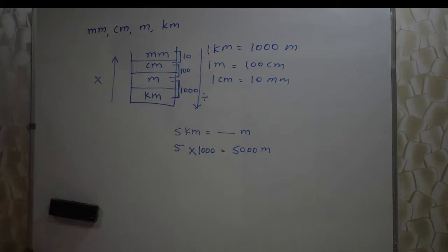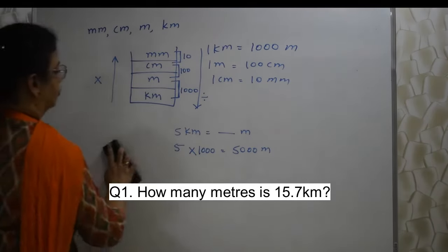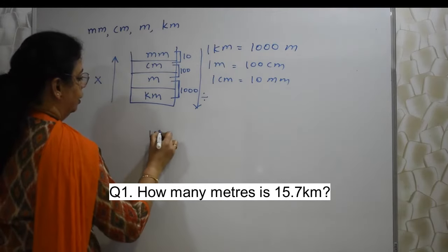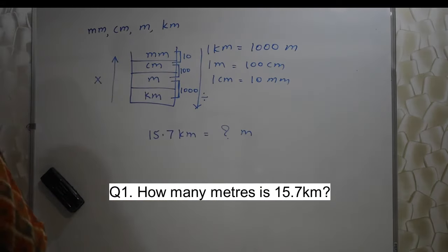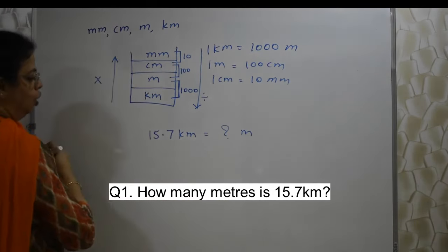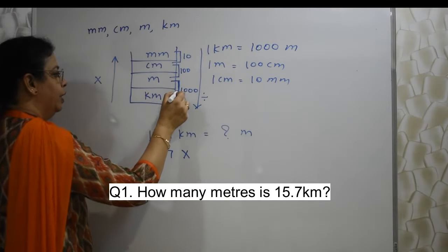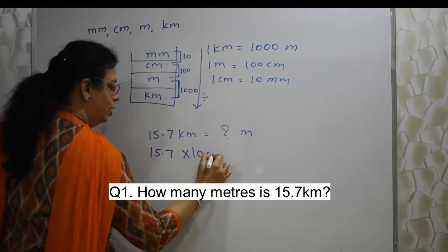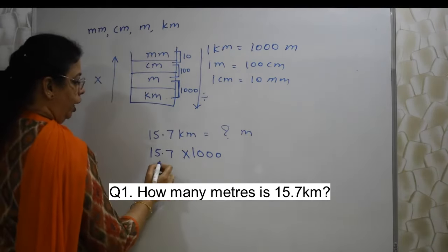Let's take few examples so that it becomes even more easy. First one, how many meters is 15.7 kilometers? This is a question. So what can be done? Kilometers is given. We need to find out meter. Again we are moving upwards. So 15.7 kilometers, so 15.7 into, with which number? Again meter, kilometer connectivity is 1000. Relation is of 1000. 1 kilometer is 1000 meter.